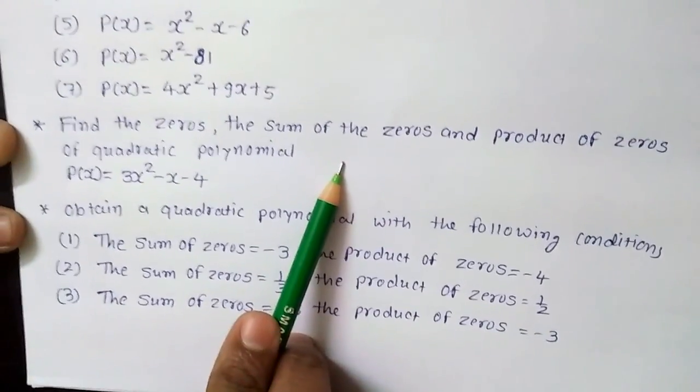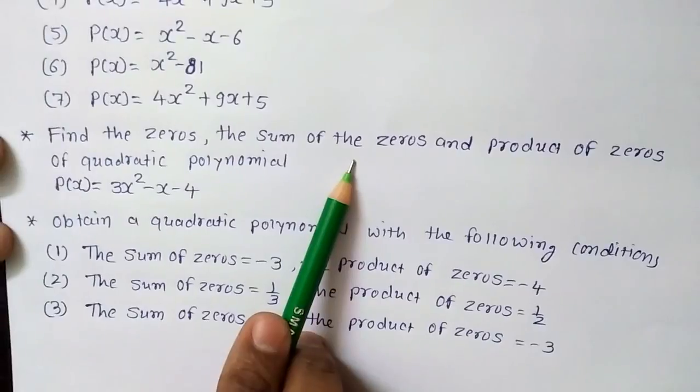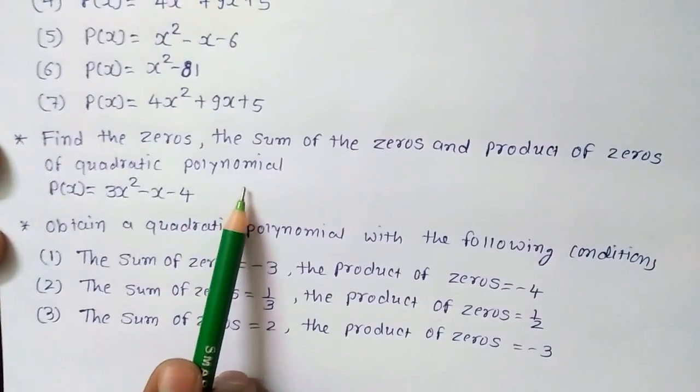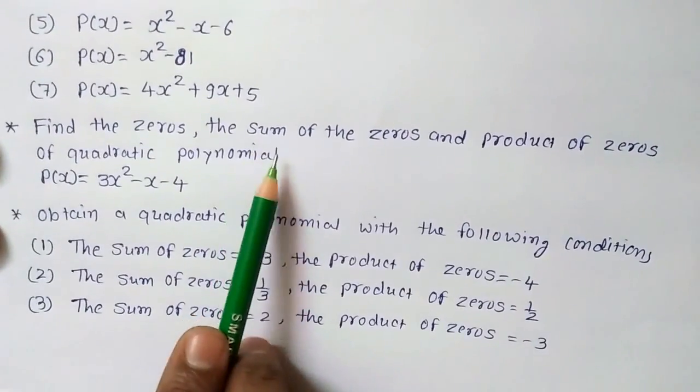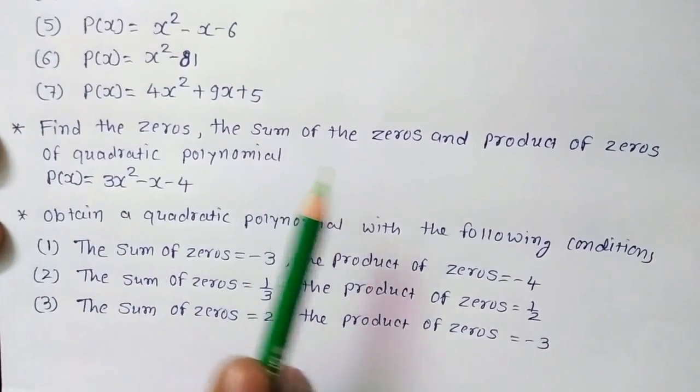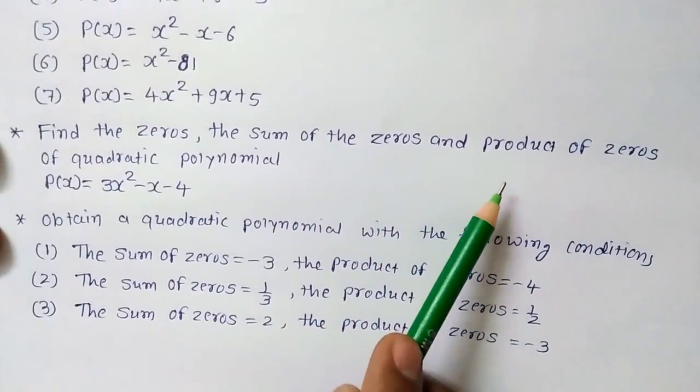You have to find out the sum of the zeros means if two zeros, one is alpha and another one is beta, then you have to go for alpha plus beta with the formula alpha plus beta and alpha into beta.